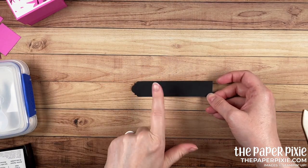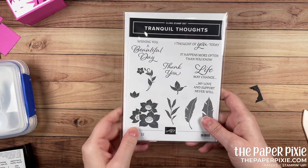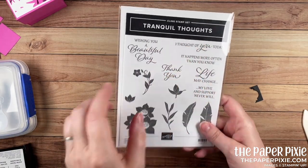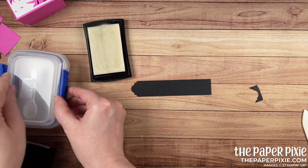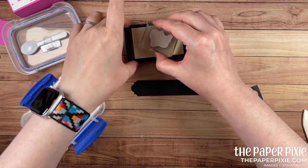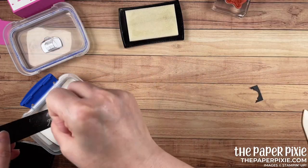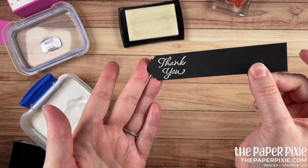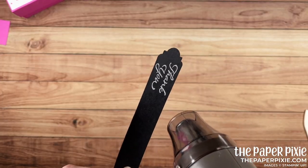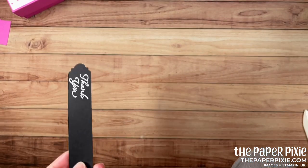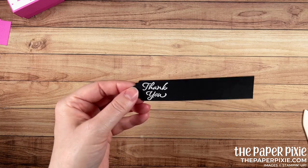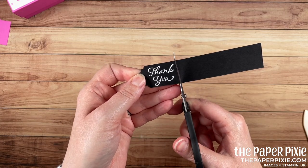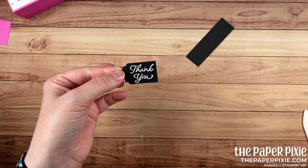That's going to give us an idea of where we want to stamp. We're going to be using the Thank You sentiment from Tranquil Thoughts and I'm going to stamp that in VersaMark ink and we're going to heat emboss it in white. That's ready to be heat embossed. Love how that white looks on the black.